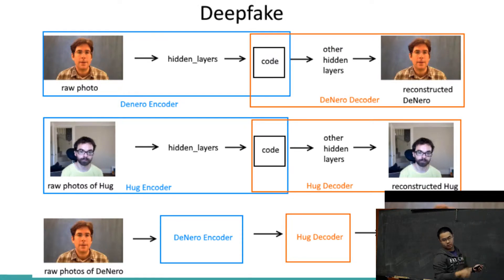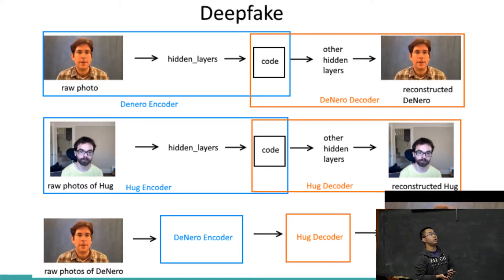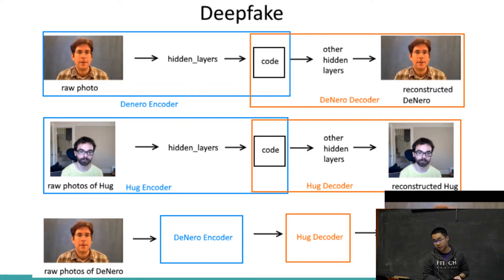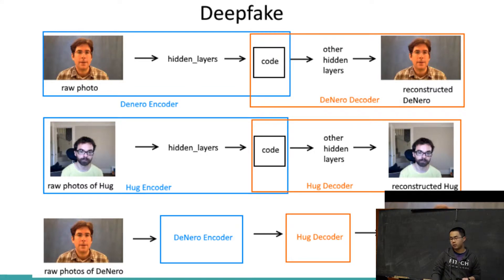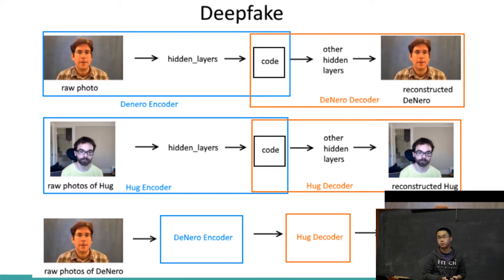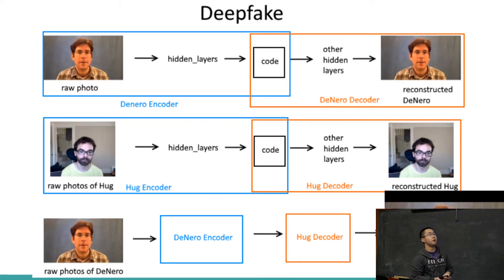Displayed on the screen is the basic idea: there are two autoencoders trained to respectively compress photos of Robert De Niro and Josh Hogg. When we decide to swap the face, we feed the photos of De Niro into the De Niro encoder, which produces a compressed version of the photo.